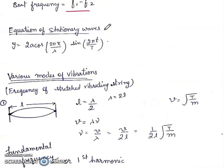Equation of stationary waves: y = 2A cos(2πx/λ) · sin(2πt/T).